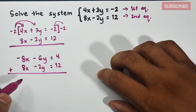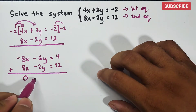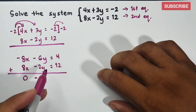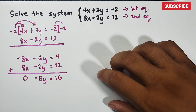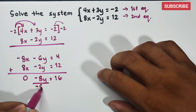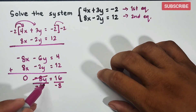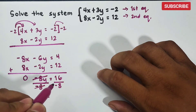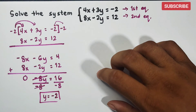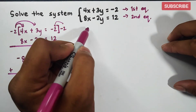Adding the two equations: negative 8x plus 8x is zero, so x is eliminated. Negative 6y plus negative 2y is negative 8y. Then 4 plus 12 equals 16, giving us negative 8y equals 16. Dividing both sides by negative 8, we get y equals 16 divided by negative 8, which is negative 2. This is the value of y.